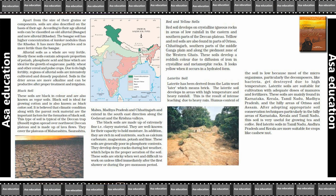These soils develop a reddish colour due to the diffusion of iron in crystalline and metamorphic rocks. It looks yellow when iron is in its hydrated form. When it is in the hydrated form, the colour appears yellow.